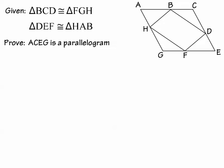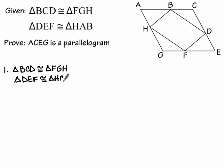In the second proof we have an entirely different situation. We're given some congruent triangles and have to prove that ACEG is a parallelogram. We start with triangle BCD congruent to triangle FGH, and triangle DEF congruent to triangle HAB. Looking at that first pair, we're trying to prove something about ACEG — the larger quadrilateral that surrounds the interior — so I want to see which parts of these triangles are also parts of the larger quadrilateral.